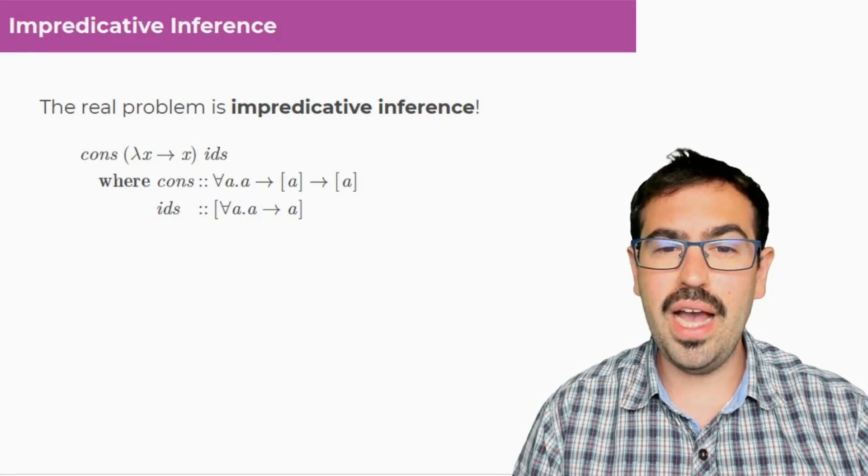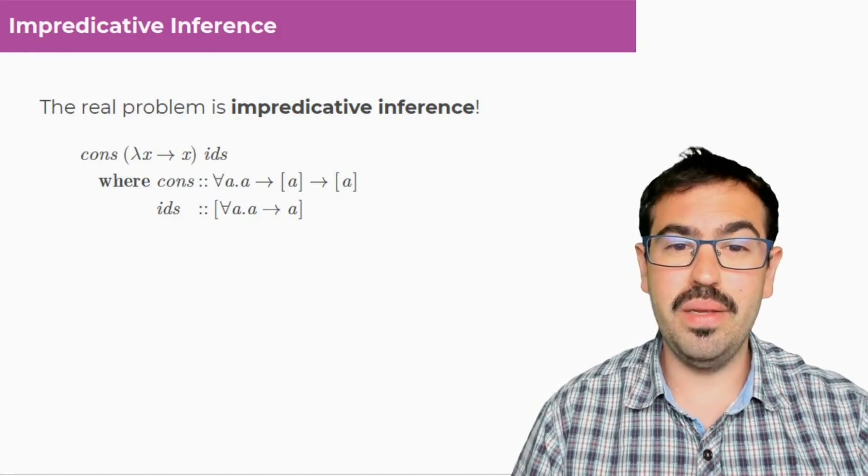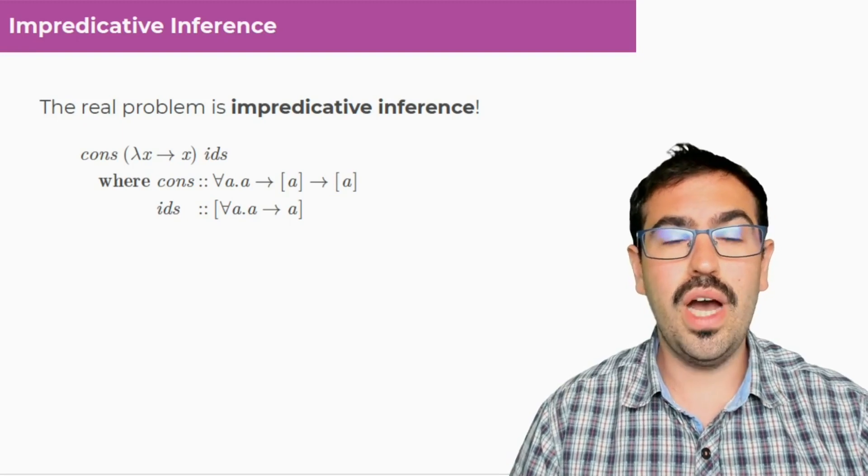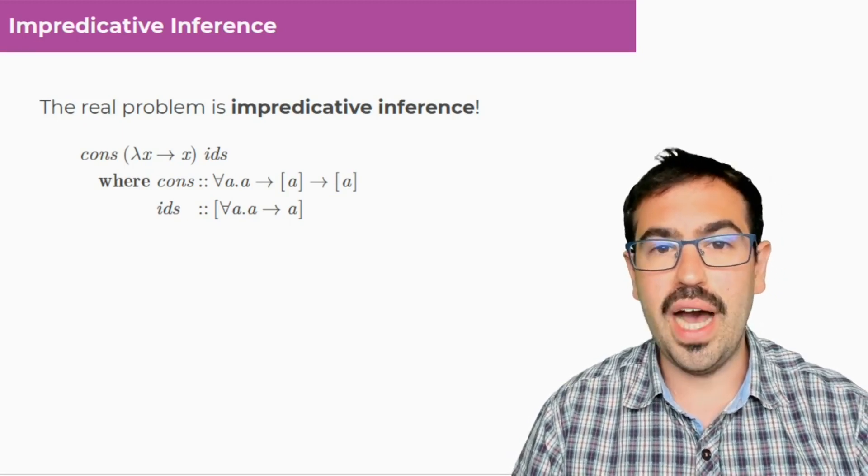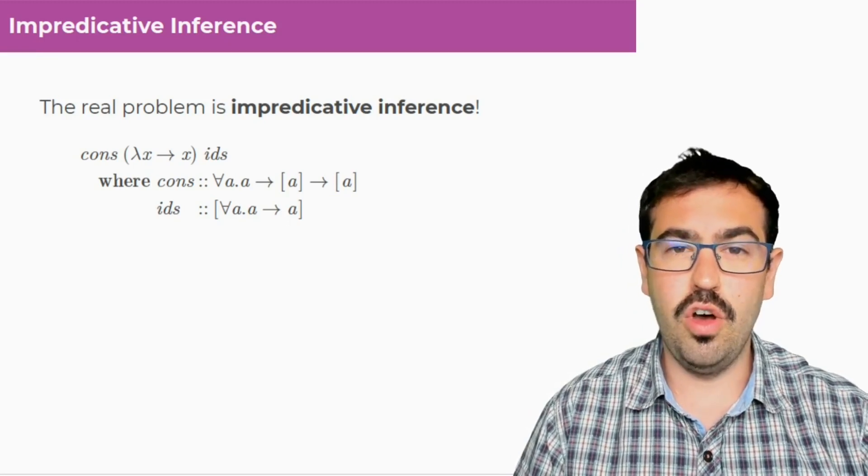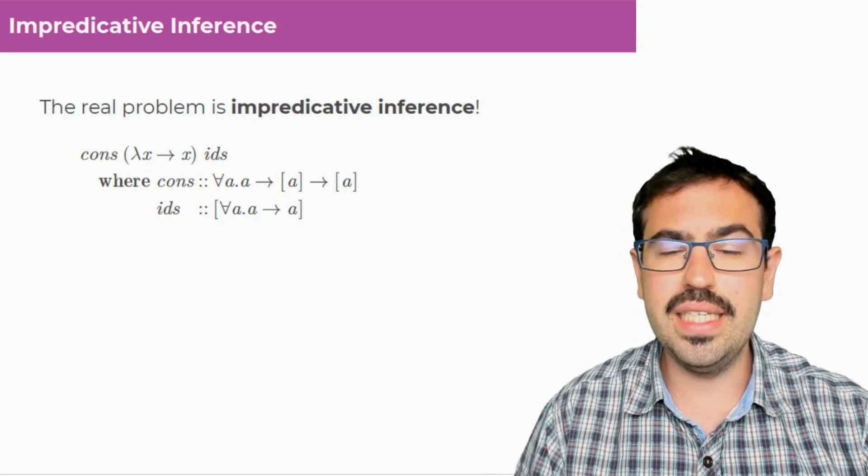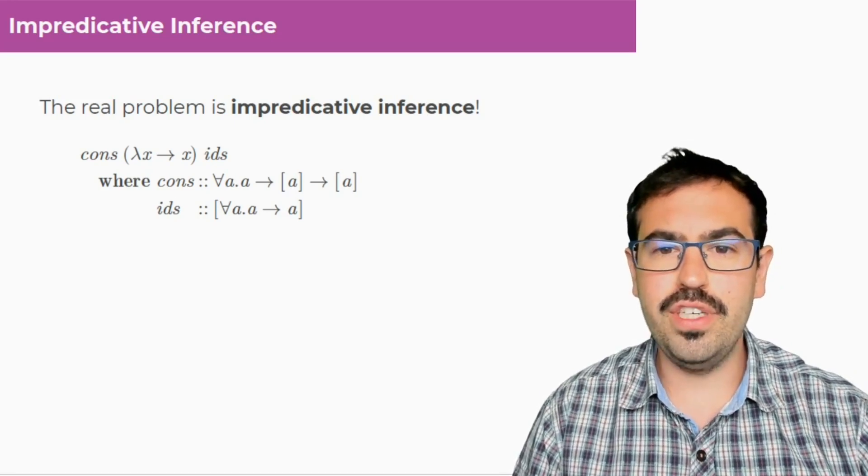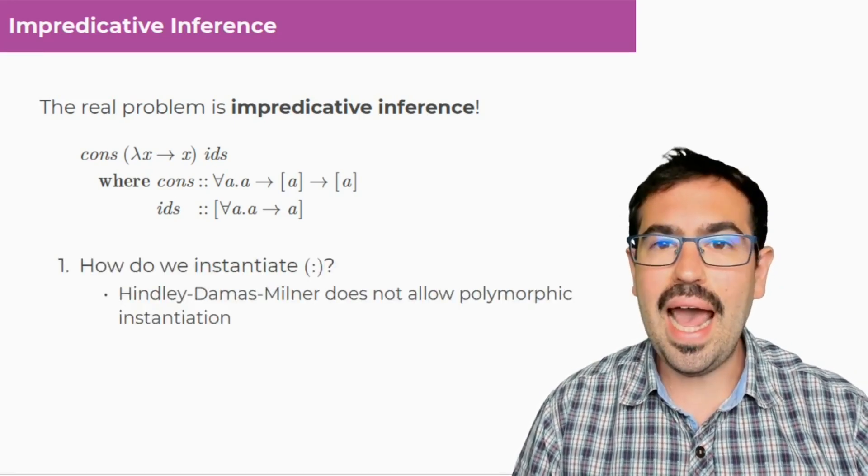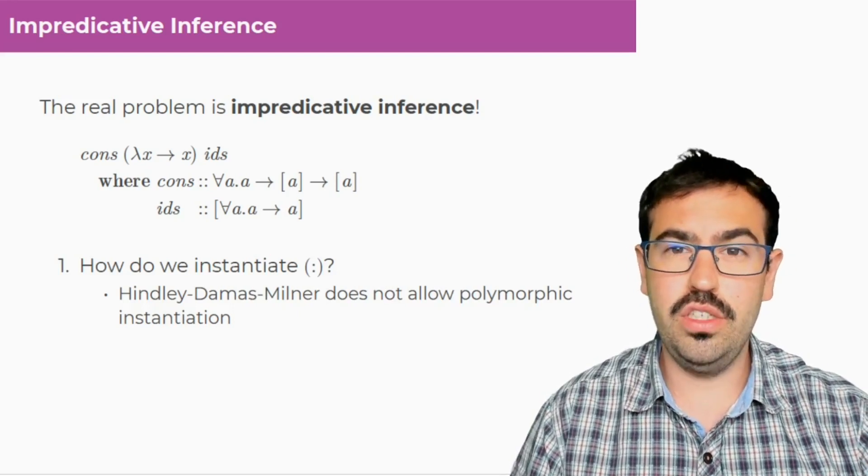So the problem actually is not impredicativity, but impredicative inference. We want to write something like here where we cons an identity function to IDs, which is itself a list of for all A dot A to A, and we want the inference engine to be able to add anything we need.